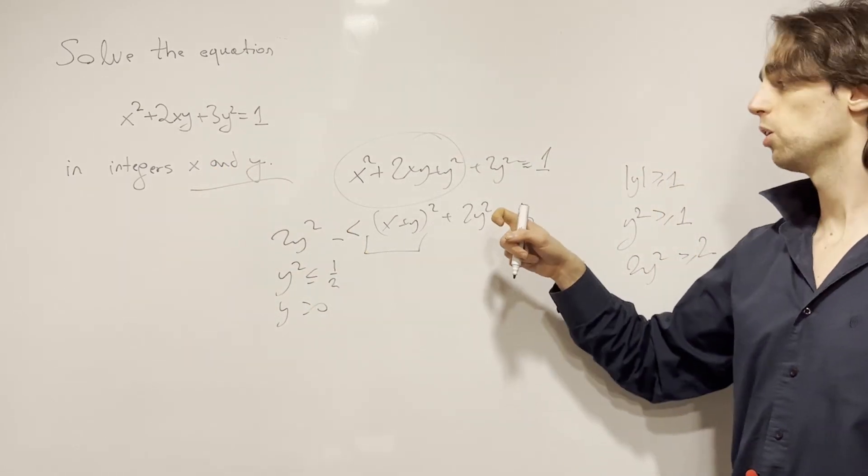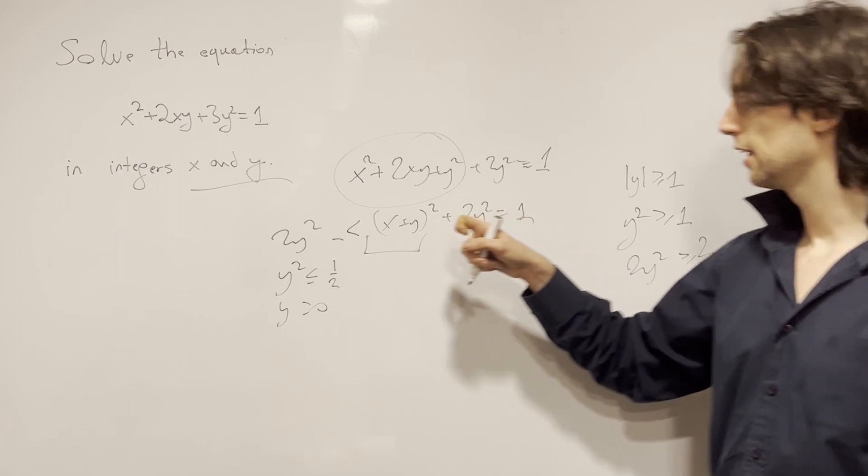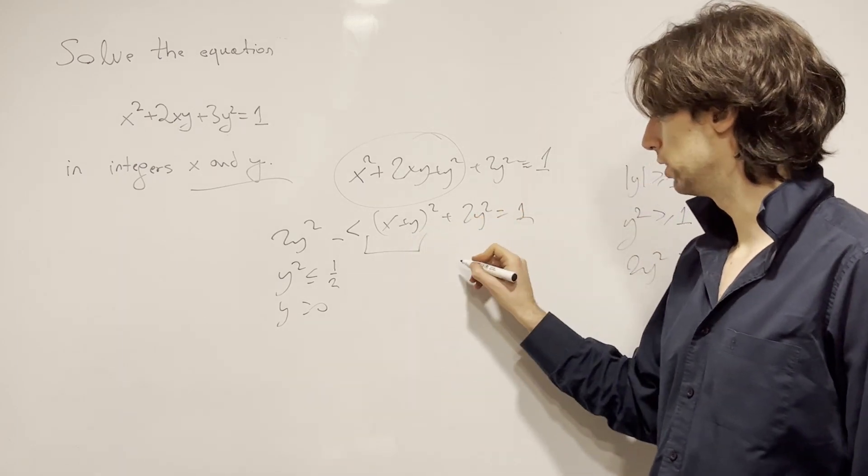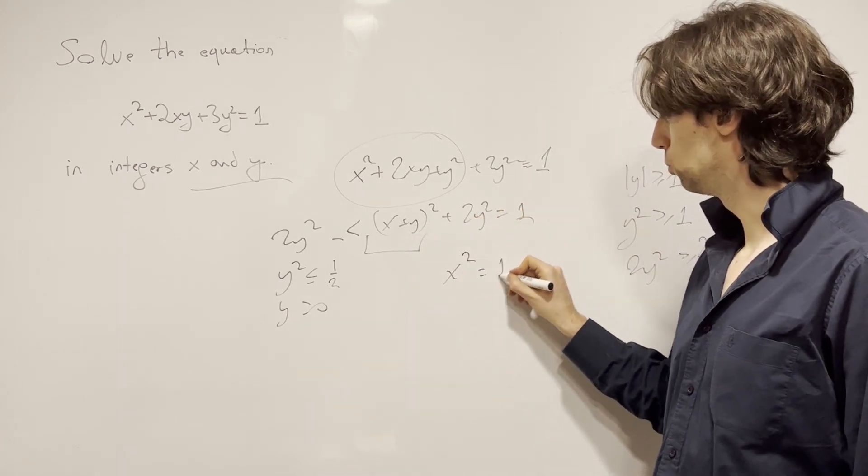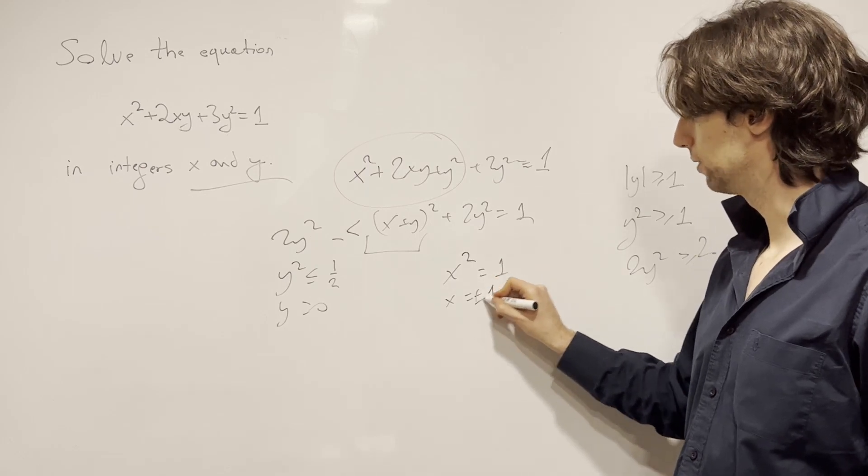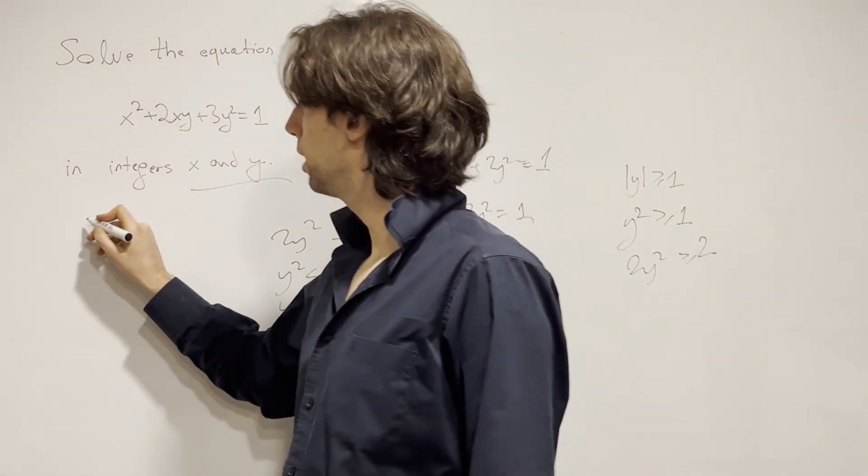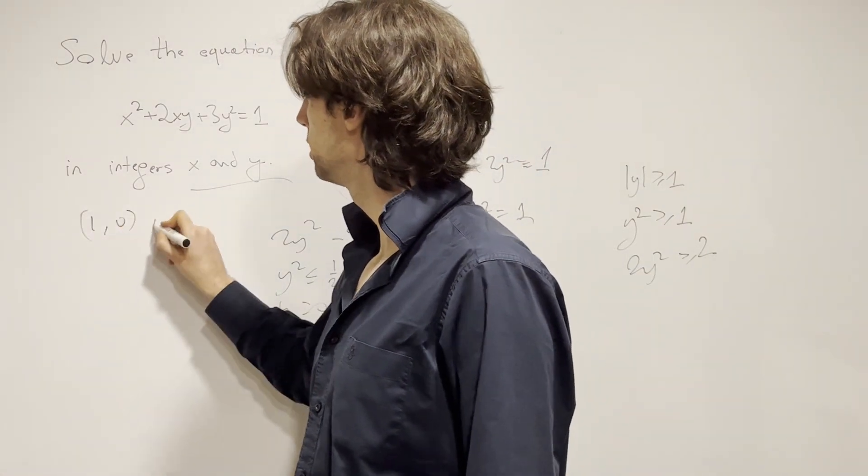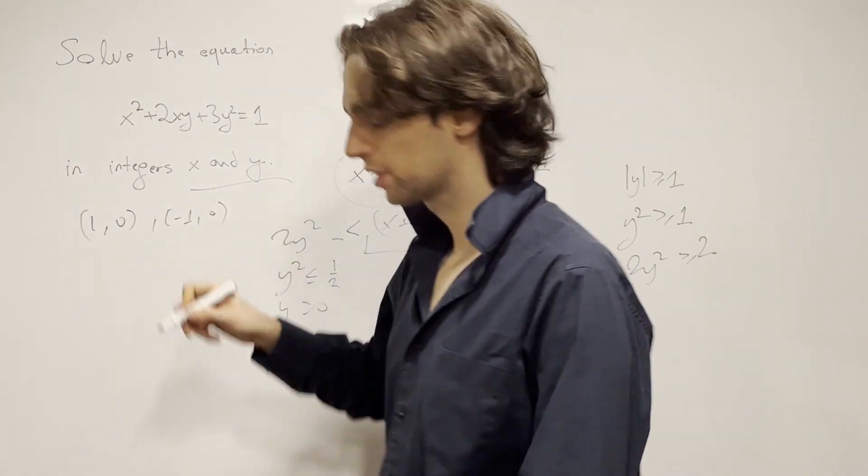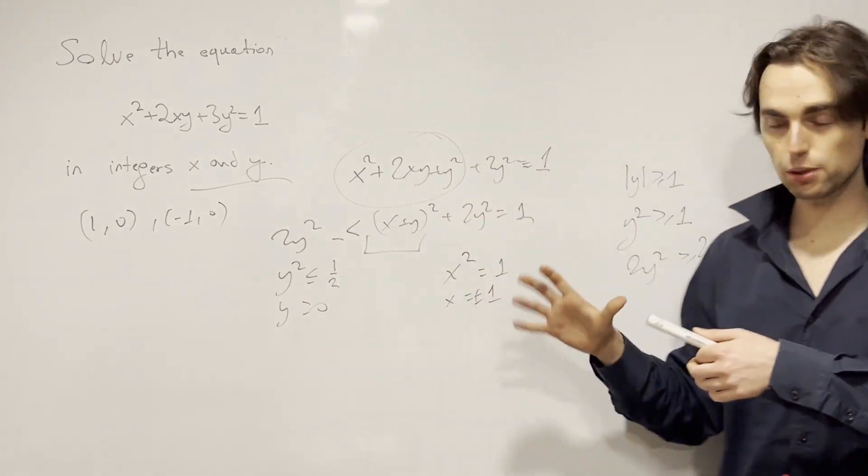And from there, y is 0. And then we have this equation x² is equal to 1. And then x is either 1 or negative 1. So it's plus or minus 1. And then we have two solutions, x and y being (1,0) or (-1,0). And this is one way of going about it.